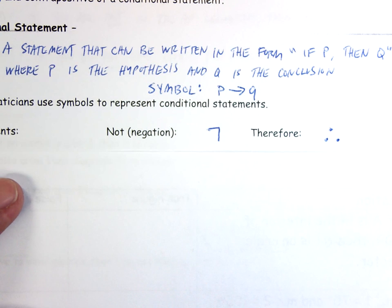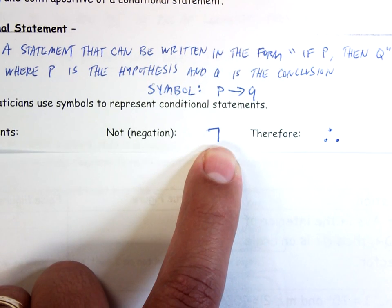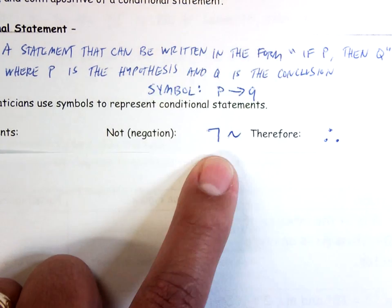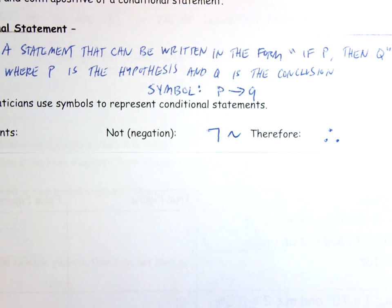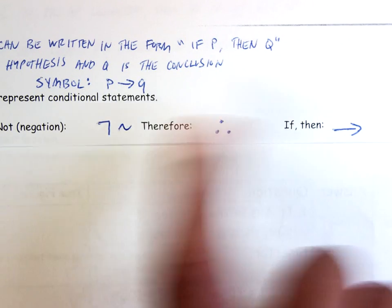Regarding negation symbols: some people use a symbol like a 7, others use a squiggly sign — both mean 'not,' followed by whatever comes after it. The arrow symbol means 'if...then,' as we saw with the conditional. We'll talk more about this in class.